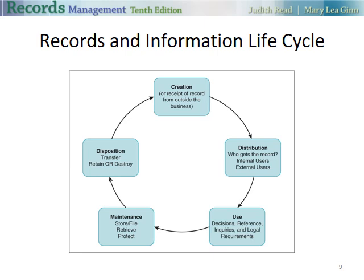On this next slide, you see those five stages of the life cycle. First is the creation or receipt of a record from outside the business. Then distribution — who gets the record, is it internal or external? How it's used: decisions, reference, inquiries, and legal requirements. How it's maintained: stored or filed, retrieved, and protected — in medical settings, there is a lot of retrieving, storing, and filing. And finally disposition: transfer, retain, or destroy. Some records may not ever be destroyed, while others that are not useful could be destroyed after a certain number of years.